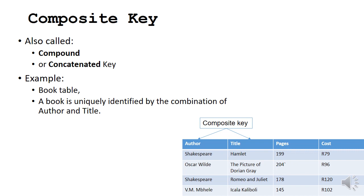So a composite key can also be called a compound key or a concatenated key. And here's an example. Say we have a book table. If we use the title on its own, that might not be unique. Or if you use the author on its own, it might not be unique. Shakespeare here has written two books. Or you could get a title of a book that a few people wrote, but use the same title for their books. So the book is uniquely identified when you use the combination of author and title. And this is a composite key.